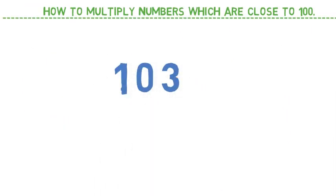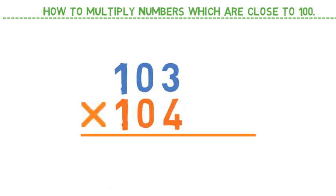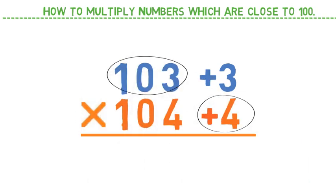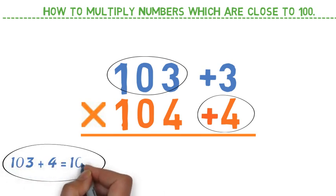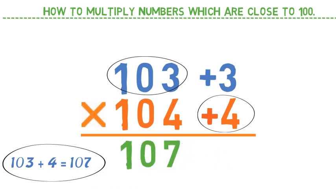Now let's move on to problem 2, which is 103 into 104. So 103, the base difference is 3. 104, the base difference is 4. Now in 103, we will simply add the base difference of other number, that means plus 4. So 103 plus 4 equals 107. We could have taken 104 as well, 104 plus 3 is 107. In either way, we can take. So let me write down 107.